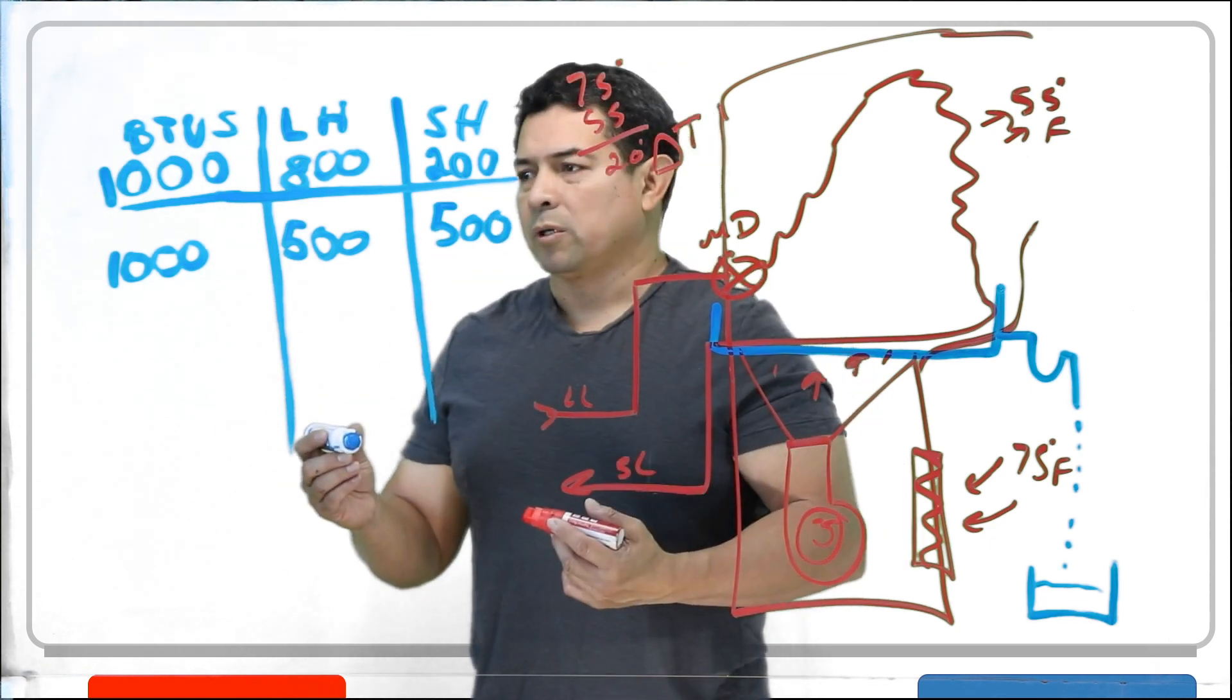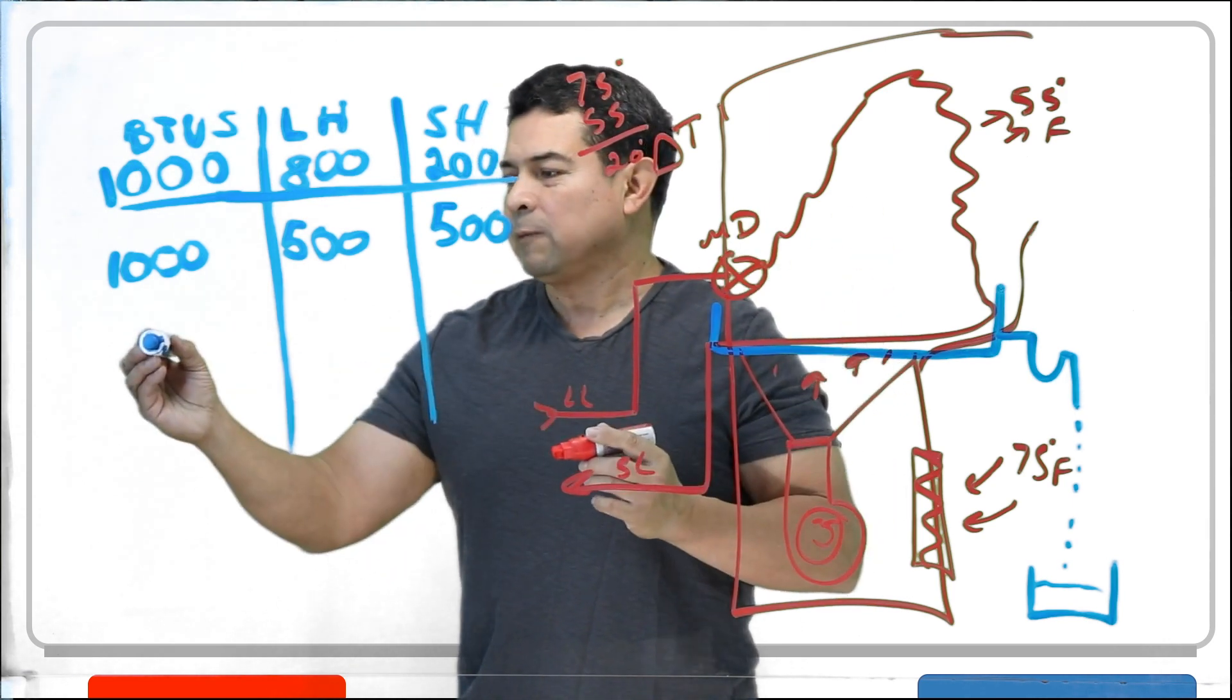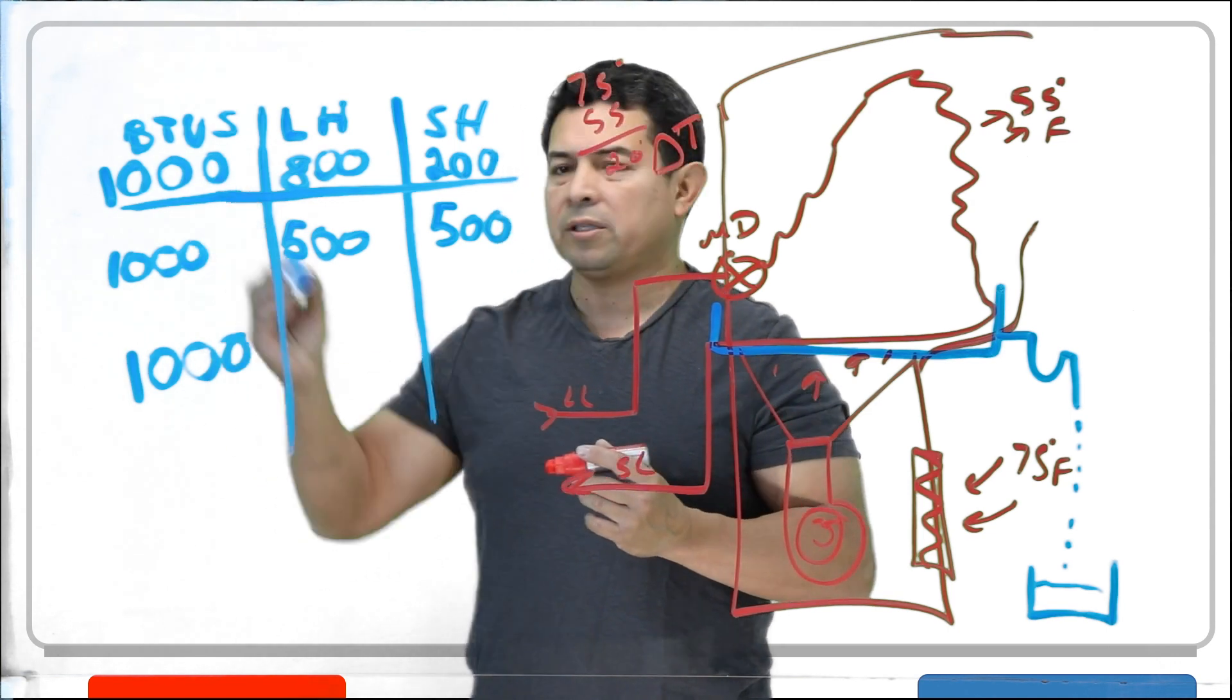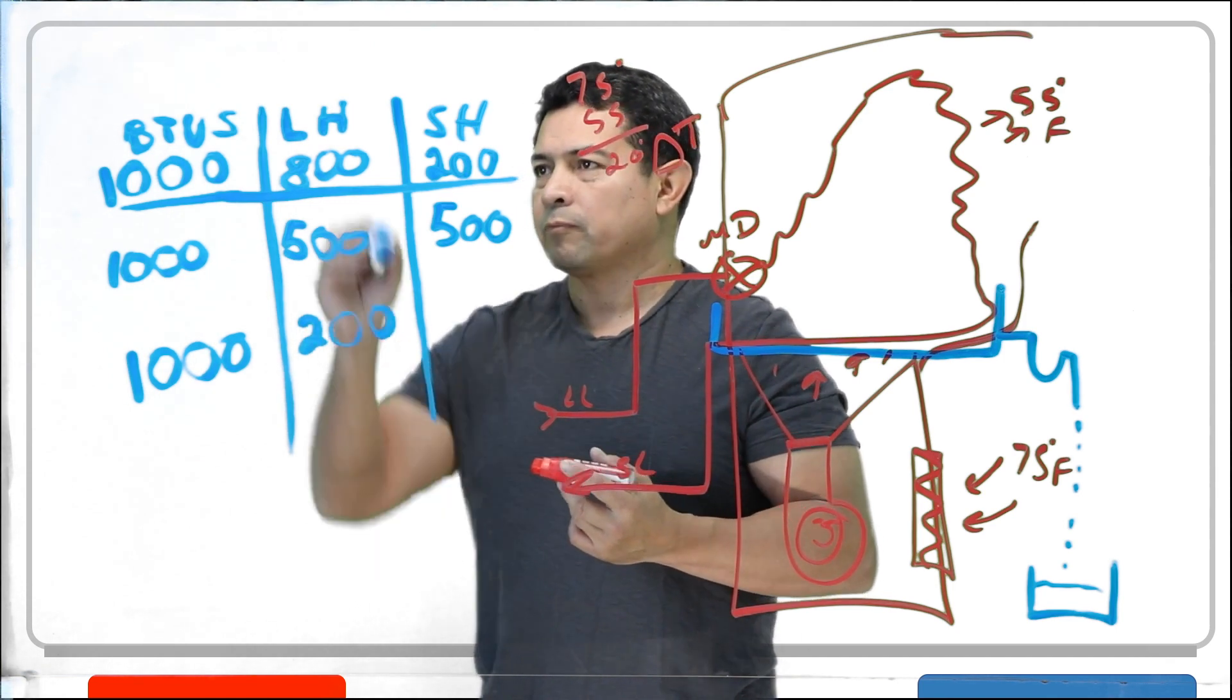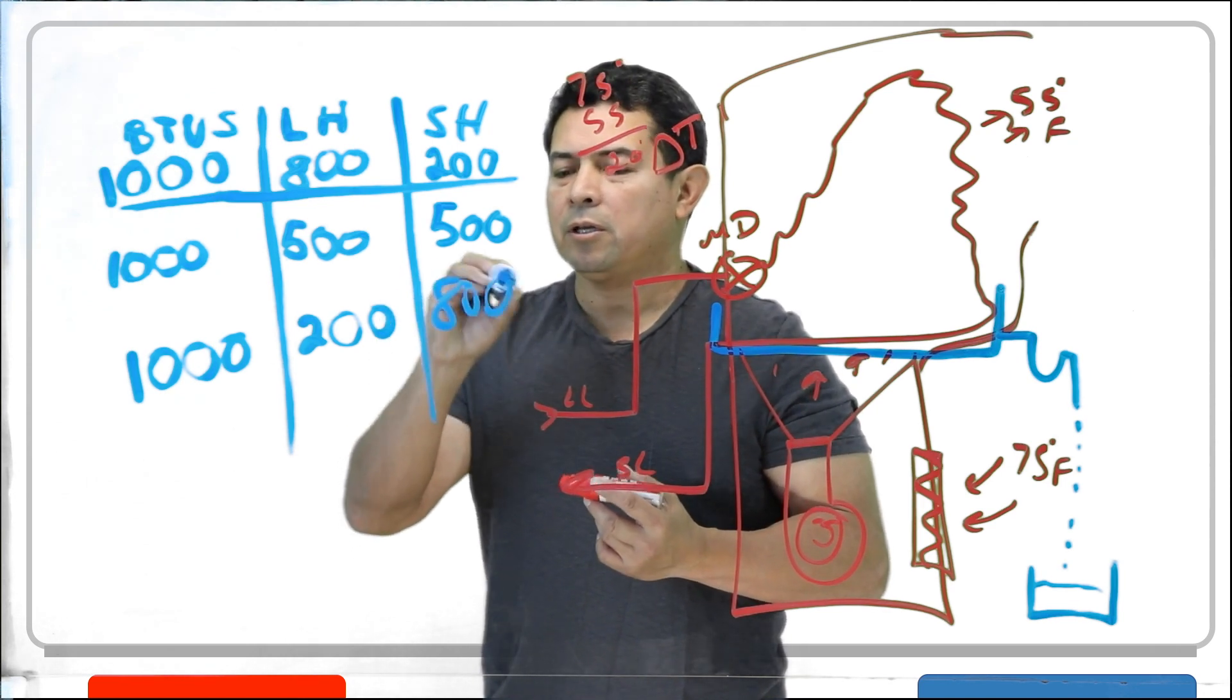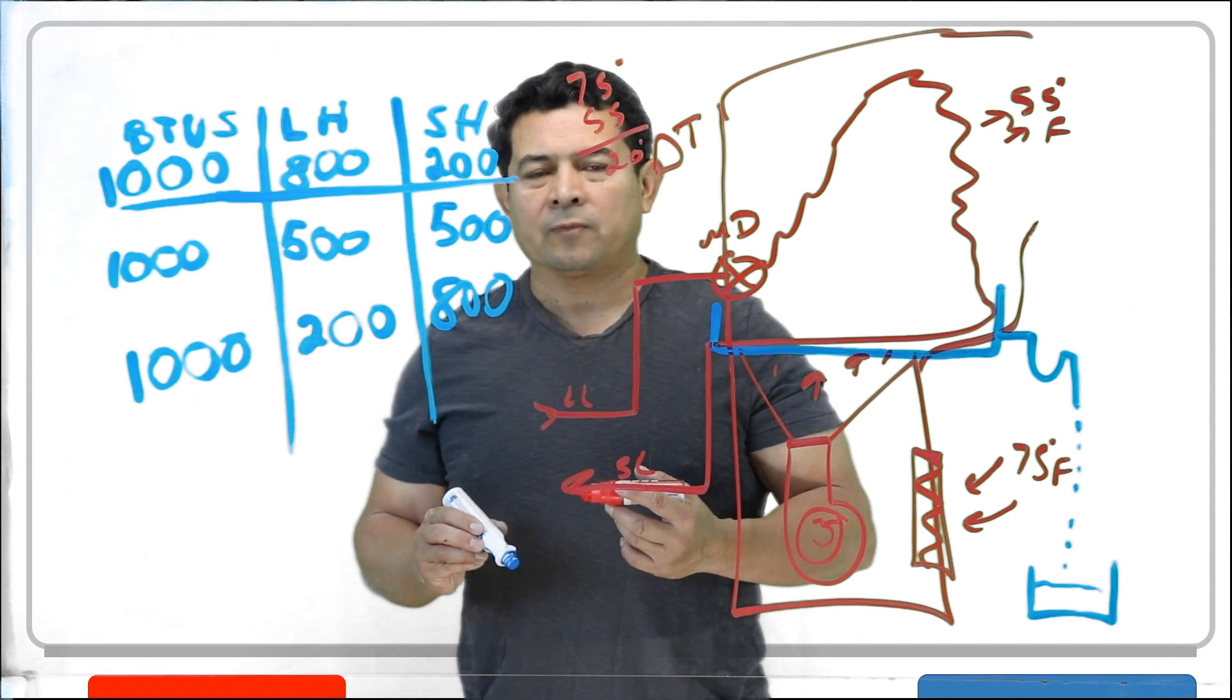Let it run some more. However, this evaporator has not changed any. It's still the same evaporator and is still designed to absorb 1,000 BTUs. But now, this will have dropped down to, let's say, 200 BTUs of latent heat. And now, we are here at 800 BTUs of sensible heat.